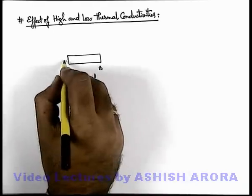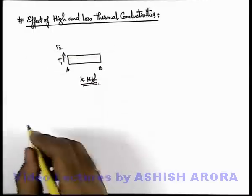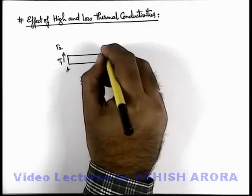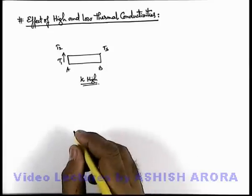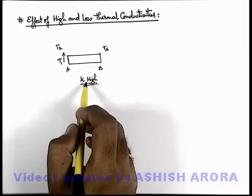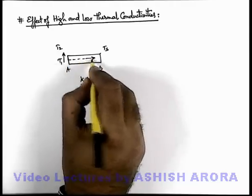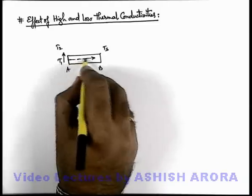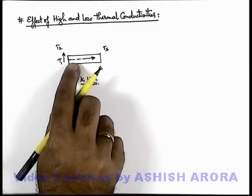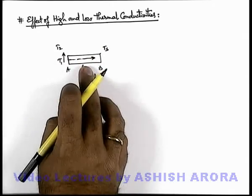If k is very high and at one end the temperature is suddenly raised from T1 to T2, whereas the other end is kept at surrounding temperature Ts, then as the conductivity is very high, as soon as the temperature increases suddenly the rate of conduction of heat also increases. Throughout the rod we assume that its temperature gradient suddenly changes from (T1 - Ts)/L to (T2 - Ts)/L.